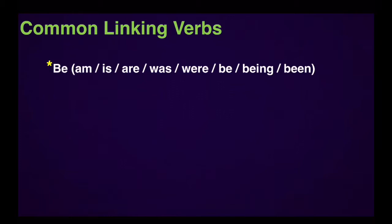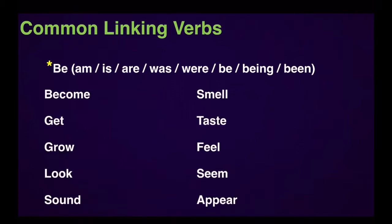However, we do have a number of other common linking verbs — for example: become, get, grow, look, sound, smell, taste, feel, seem, and appear. All of these verbs can function as linking verbs in a sentence, which means that the information which comes after the verb is simply describing the subject. These are not action verbs when they are working as linking verbs, but you have to be careful because some of these verbs can work either as an action verb or as a linking verb. You just have to see what kind of information the sentence is giving you.